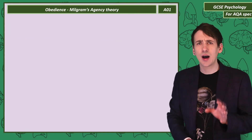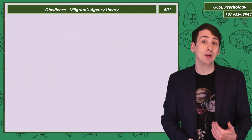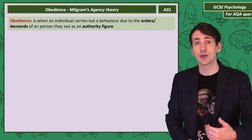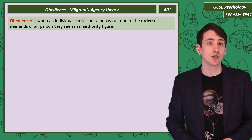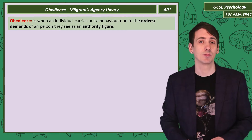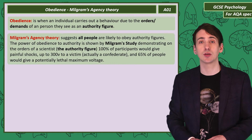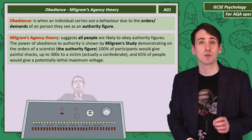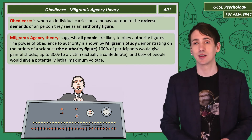To define obedience: you're obedient when your behaviour is the result of the orders or demands of a person you see as an authority figure. A very famous psychologist called Stanley Milgram investigated obedience in one of the most famous psychology studies.